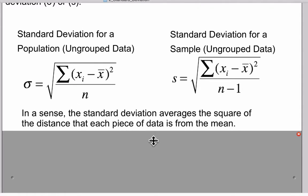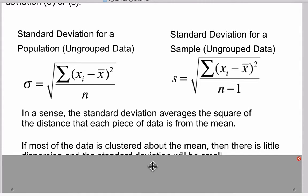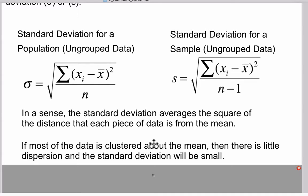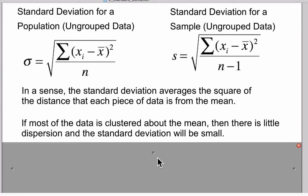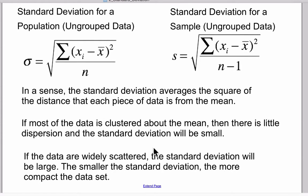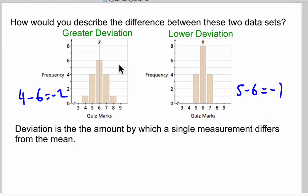If most data is clustered about the mean, then there is little dispersion and the standard deviation will be small. Going back to the graph that we were looking at before, here we have lower deviation and you'll notice that the data is clustered about the mean, so that means we're going to have lower variance, lower standard deviation. Similarly, if data is widely scattered, the standard deviation will be larger. The smaller the standard deviation, the more compact the data set. This data set will have greater standard deviation because the data is more spread out from the mean.